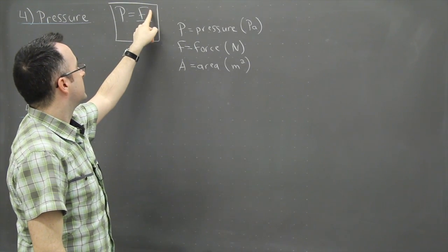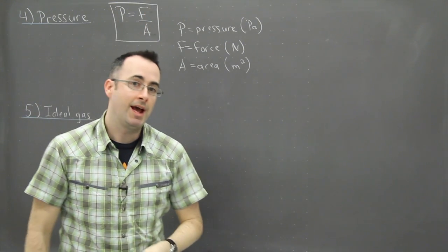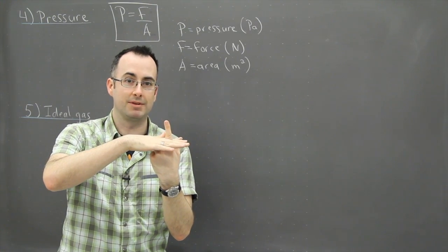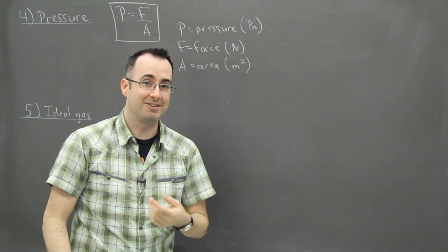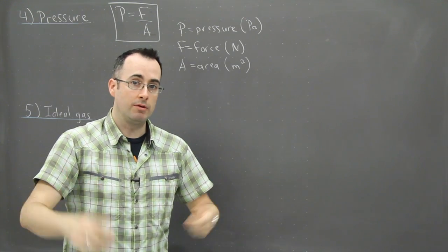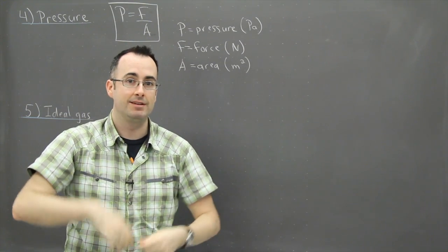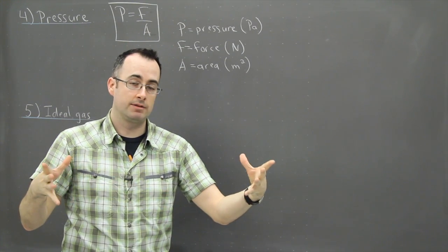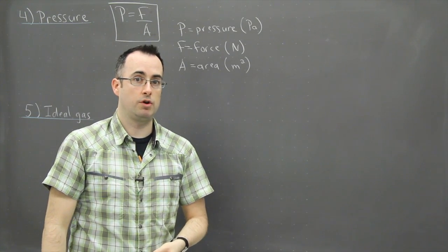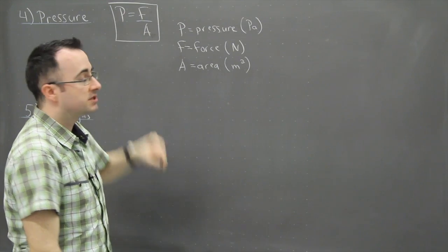If the force is constant and the area is very small, dividing by a small number means a large pressure — and that's what actually pierces through you, which you obviously don't want. So what can you do? If you apply that same force over a larger surface area — like a seat or lots of nails — it won't go through you, because increasing the area makes the pressure smaller.